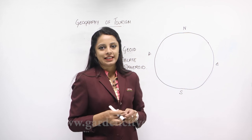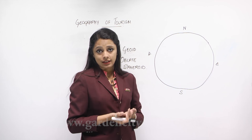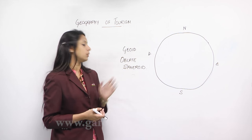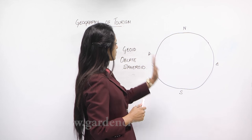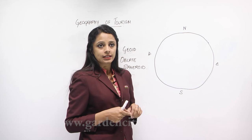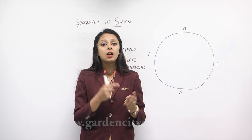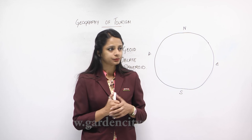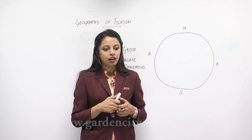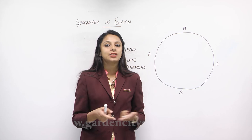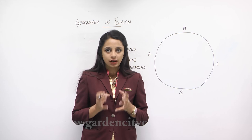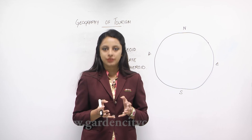Gone are the days when people said the shape of the earth is flat like a disk, or that it is round. Scientifically, the correct term is geoid or oblate spheroid. There are also many imaginary lines that run through the surface of the earth — such as the equator, the Tropic of Cancer, the Tropic of Capricorn, latitudes, and longitudes.